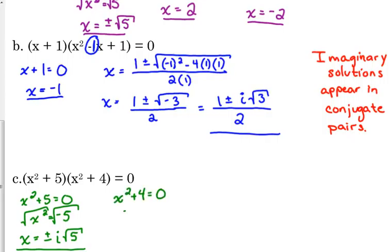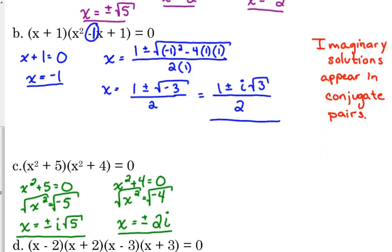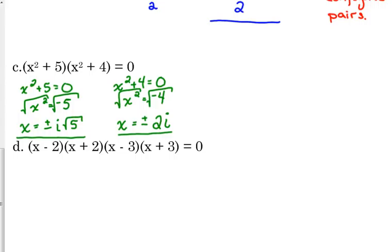For the other one, we've got x squared is equal to negative four. Take the square root of both sides. So x is equal to positive and negative. Four is a perfect square, so we will express that as 2i. So the square root of four is two, but it was negative four, so we've got to put in the i.